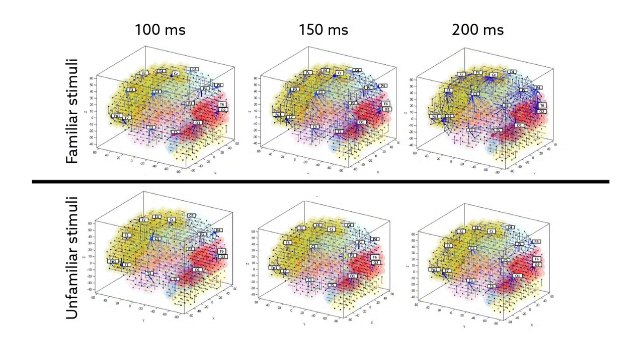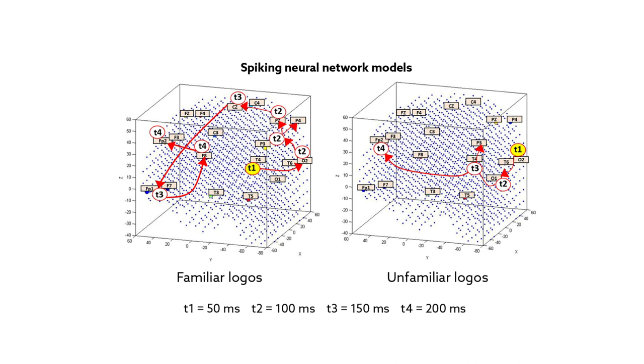With the model, the team mapped EEG data to a spiking neural network, which used a three-dimensional template to identify regional brain activity. Using this information, the model learned and classified patterns in brain responses. This allowed the researchers to follow the firing of different neurons over time, enabling them to track pre-conscious brain activity.